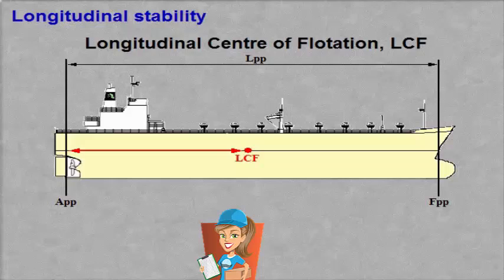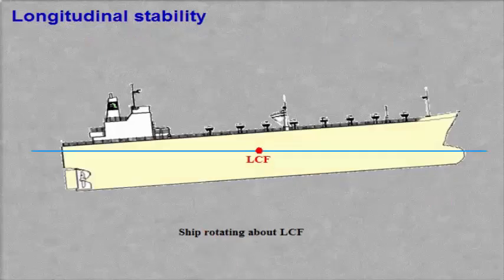When changing trim, a ship will rotate about a transverse axis that passes through the centre of the actual waterline. This centre is called the longitudinal centre of flotation, LCF. LCF is read out from the hydrostatic data of the ship at the given conditions. This is an example of a ship rotating about LCF.